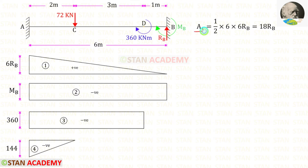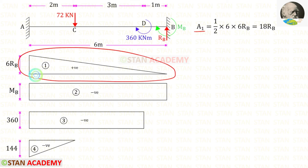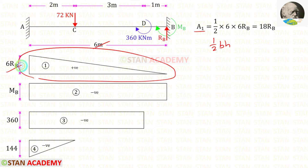Let us find Area 1. We know it is a triangle, and the area formula is half into B times H. Here the breadth is 6 and the height is 6RB. For Area 1 we will get 18RB.